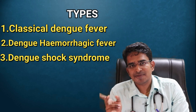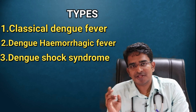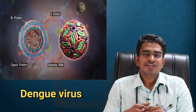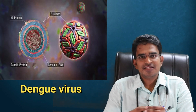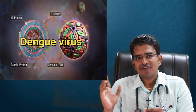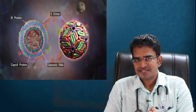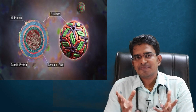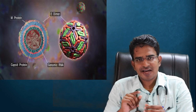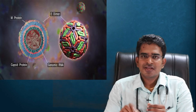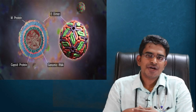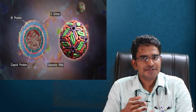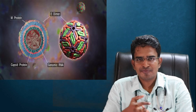Dengue is caused by the Dengue virus, which belongs to the Flavivirus family. If you examine the structure, you can see it has a single-strand RNA. There are three proteins: C-protein, M-protein, and E-protein.